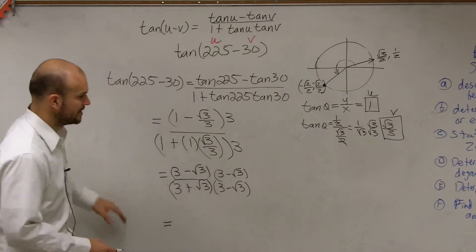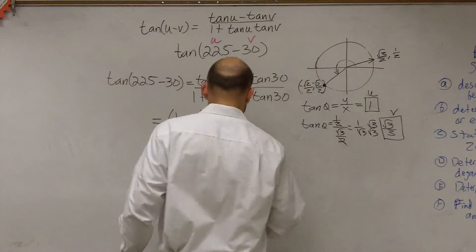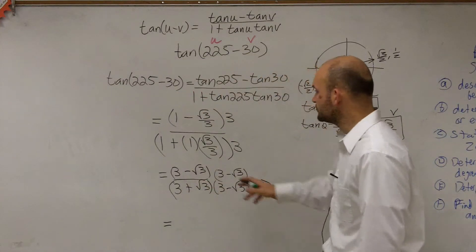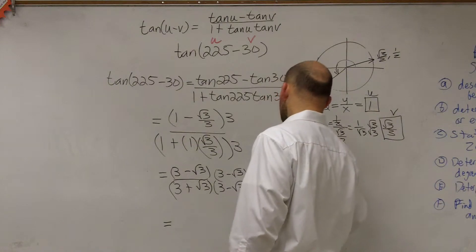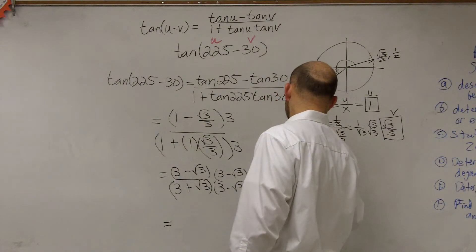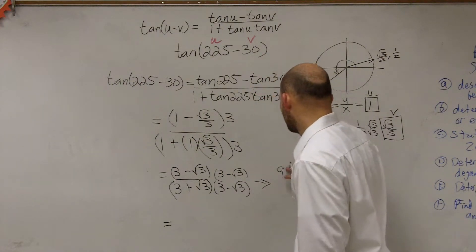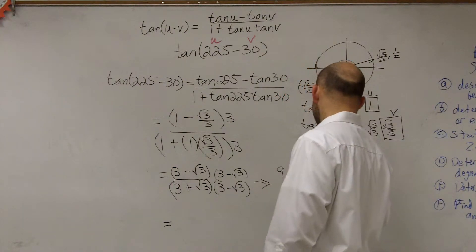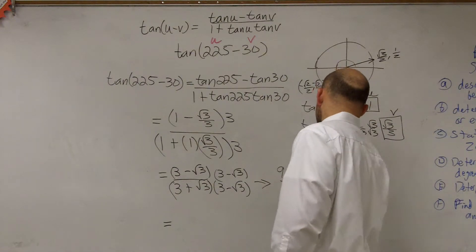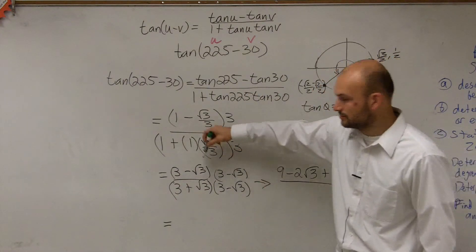So now on our new denominator, we're going to have 9 plus, minus, that's a negative, minus radical 3, and then that's going to be plus 3. All I'm doing is I'm doing FOIL.